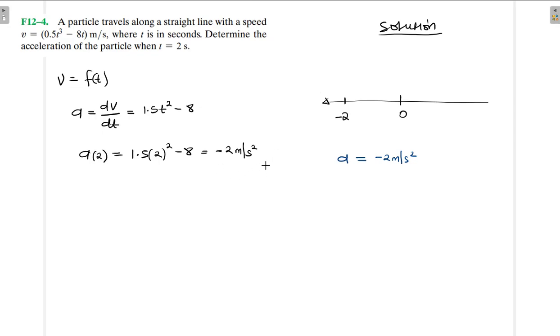So this negative acceleration is called deceleration. It means that the particle is decelerating, or it's accelerating in the negative direction, 2 meters per second squared in this direction.